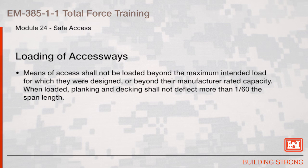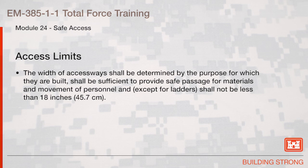Loading of access ways: Means of access shall not be loaded beyond the maximum intended load for which they were designed or beyond their manufacturer-rated capacity. When loaded, planking and decking shall not deflect more than 1/60th the span length. The width of access ways shall be sufficient to provide safe passage for materials and movement of personnel, and except for ladders, shall be not less than 18 inches.